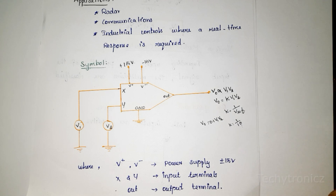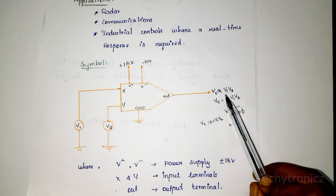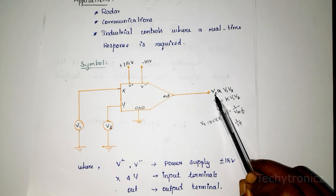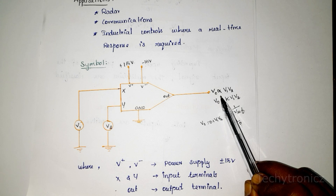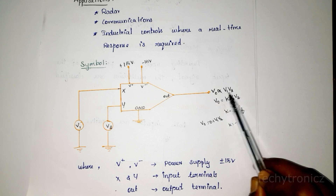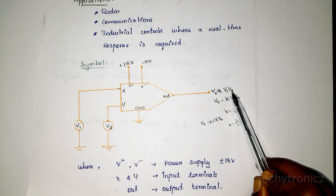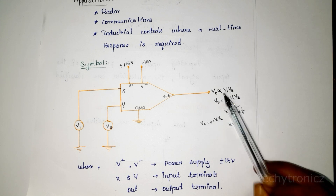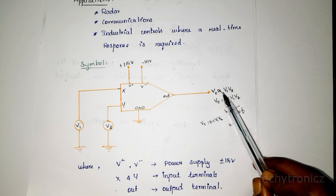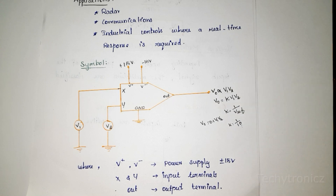Once again, the analog multiplier is defined as: output voltage is directly proportional to the product of two input voltages, and output current is directly proportional to the product of two input currents.